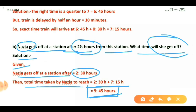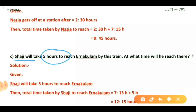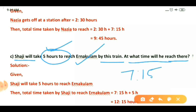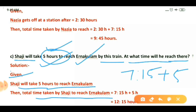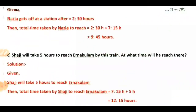Question c: Shazi will take five hours to reach Ernakulam station by this train — at what time will he reach there? Given: Shazi takes five hours to reach Ernakulam. The train arrived at 7:15 hours, so total time for Shazi is 7:15 plus 5 hours. Seven plus five is twelve, and 15 minutes remain, so the answer is 12 hours 15 minutes. In this way we have solved all the word problems.